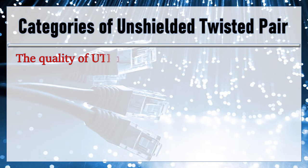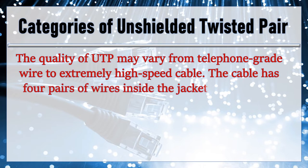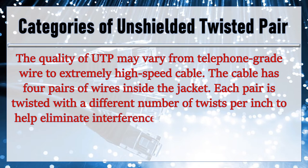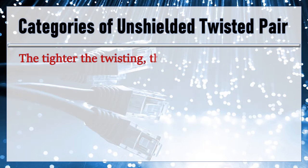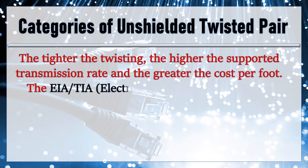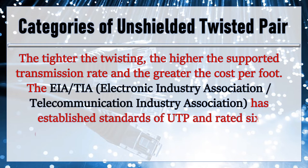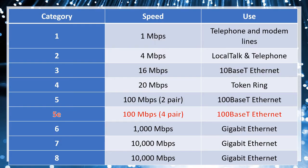The quality of UTP may vary from telephone-grade wire to extremely high-speed cable. The cable has four pairs of wires inside the jacket. Each pair is twisted with a different number of twists per inch to help eliminate interference from adjacent pairs and other electrical devices. The tighter the twisting, the higher the supported transmission rate and the greater the cost per foot. The EIA/TIA — Electronic Industry Association / Telecommunication Industry Association — has established standards for UTP and rated six categories of wire, with additional categories emerging. There are different categories of UTP cable, each with its own speed and uses.